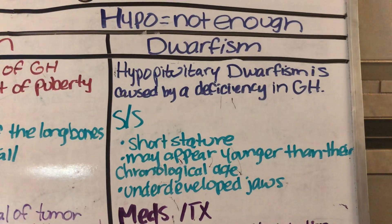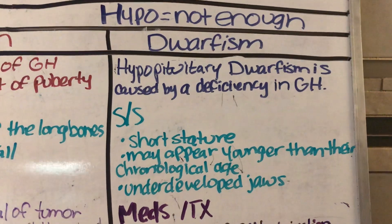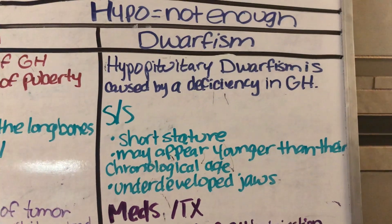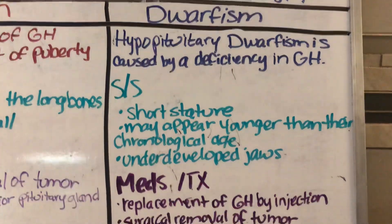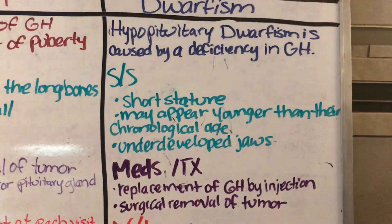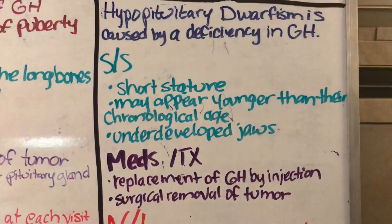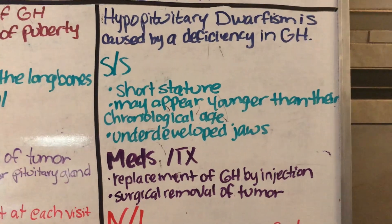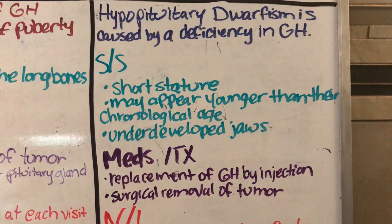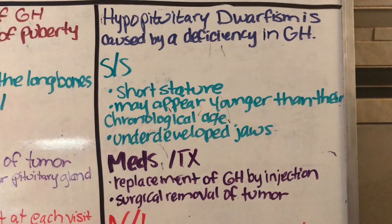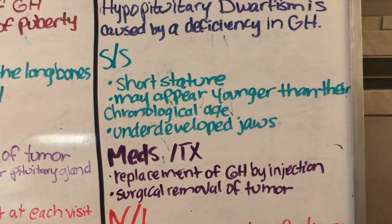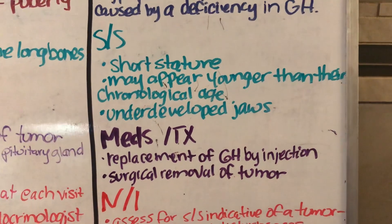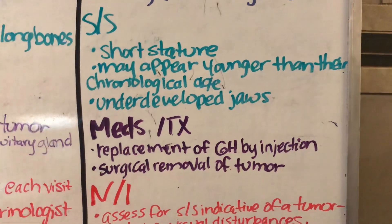Now we have dwarfism — hypopituitary dwarfism is caused by a deficiency in GH, meaning there is not enough. Signs and symptoms include short stature; the child may appear younger than their chronological age, and they may have underdeveloped jaws.